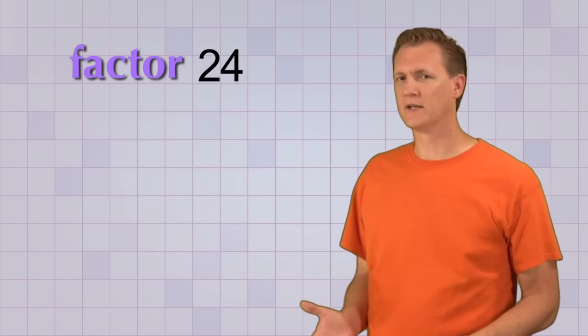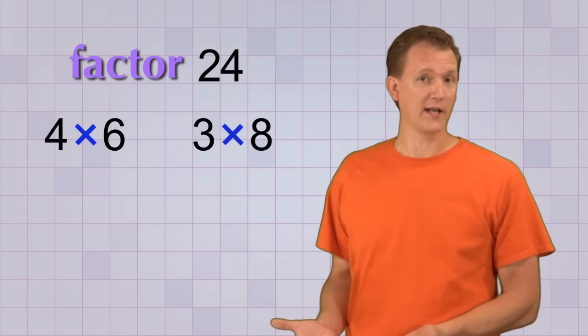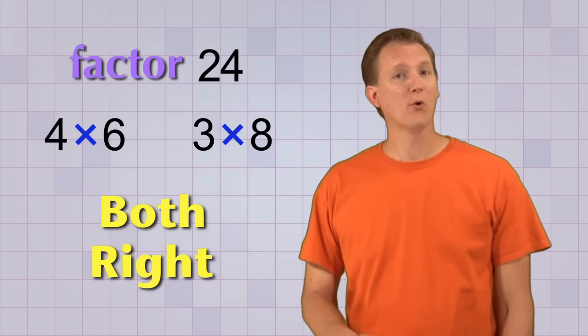So which of the factors is right? Is it 4 and 6, or 3 and 8? Actually, they're both right. There can be more than one way to factor a number. That's one of the things that might make factoring a little confusing at first.